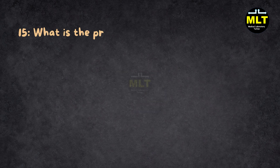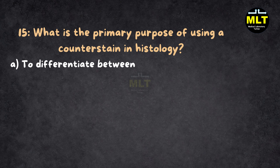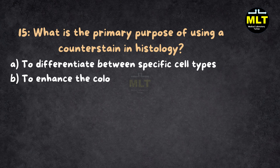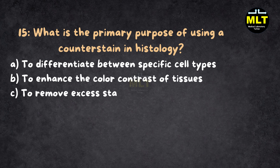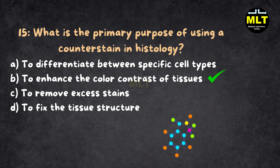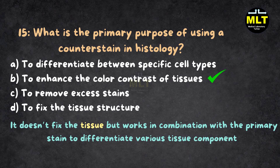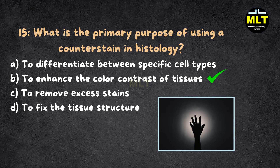Question 15: What is the primary purpose of using a counterstain in histology? Options: A. To differentiate between specific cell types, B. To enhance the color contrast of tissues, C. To remove excess stains, D. To fix the tissue structure. Correct Answer: B. To enhance the color contrast of tissues. Explanation: Counterstaining is used in histology to enhance the contrast of tissue sections, making specific elements like cell nuclei or cytoplasm more visible. It works in combination with the primary stain to differentiate various tissue components — it's like the shadow that makes your photo pop.